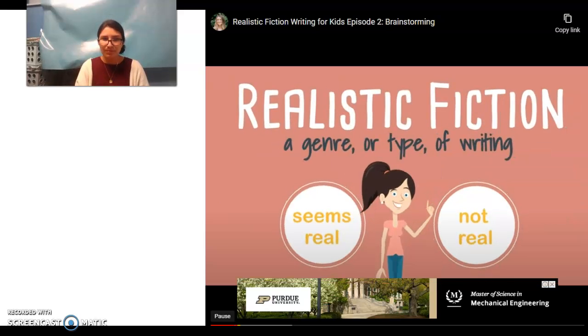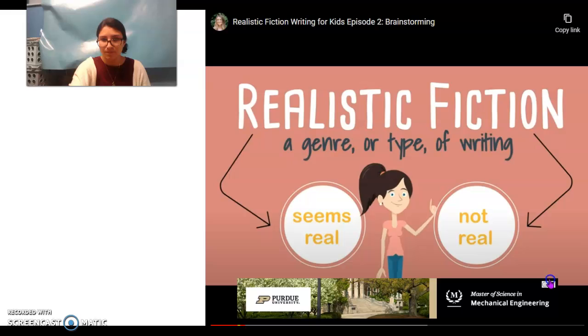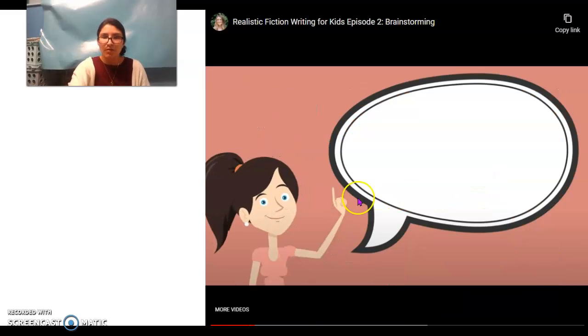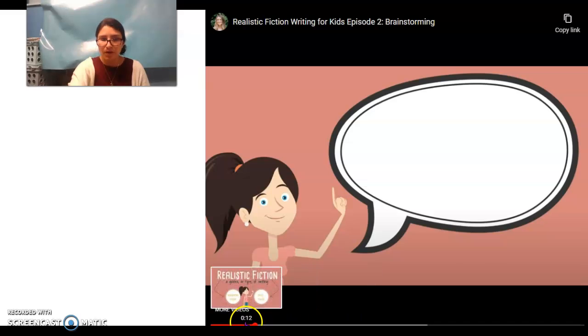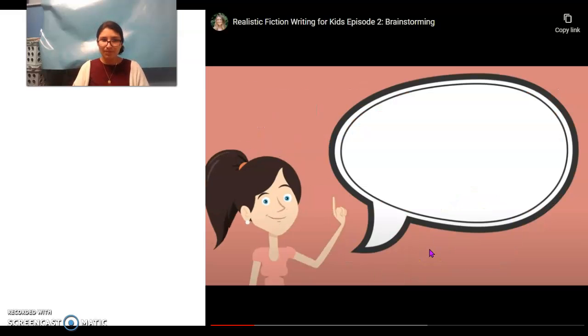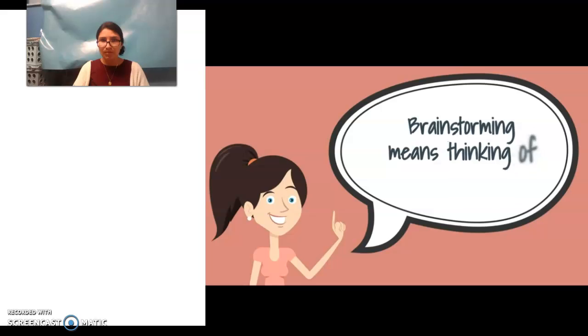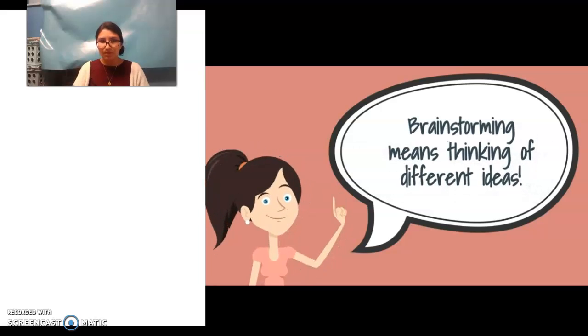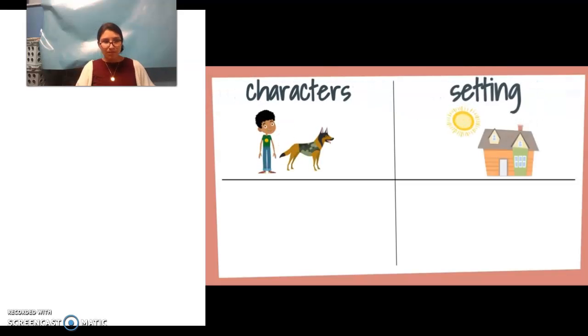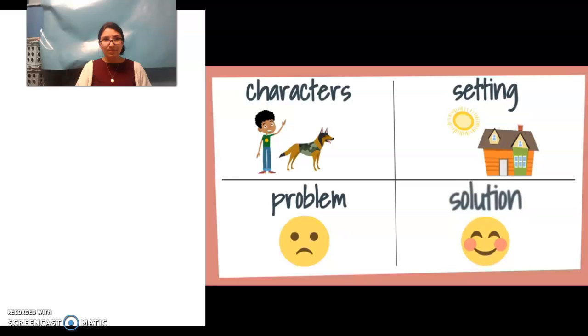Now that you know what realistic fiction is, you can start brainstorming ideas for your story. Remember, realistic fiction: a genre or type of writing. Realistic seems real, fiction but it's not real. Brainstorming just means thinking of different ideas. We will brainstorm the most important parts of the story: the characters, the setting, the problem, and the solution.